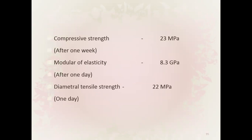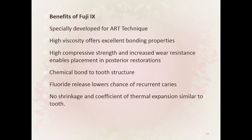Mechanical properties: compressive strength 23 MPa after one week, modulus of elasticity 8.3 GPa, diametrical tensile strength 22 MPa. Benefits of Fuji 9: specially developed for ART technique, high viscosity offers excellent bonding properties, high compressive strength, increased wear resistance, enables placement in posterior restorations, chemical bond to tooth structure, fluoride release lowers the chance of recurrent caries, no shrinkage, and coefficient of thermal expansion similar to tooth.